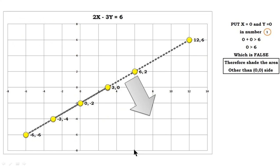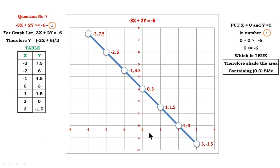The arrowhead represents the region you have to shade. Question number 7: minus 3x plus 2y greater than or equal to minus 6. The equality sign is present, so the line will be dark. For graphical purposes, write minus 3x plus 2y equals minus 6. Now calculate the value of y, which is y equals minus 3x plus 6, divided by 2.